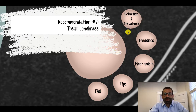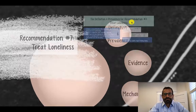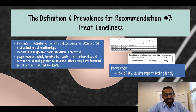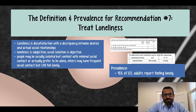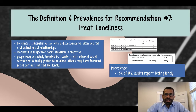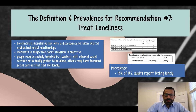Let's take a look at the definition and prevalence of loneliness. Loneliness is dissatisfaction with a discrepancy that one sees between their desired and actual social relationships. In other words, they want to have an intimate partner but don't, or they want to have friends — more friends or different friends — but don't. Between what they have and what they desire, there's a discrepancy, and it causes dissatisfaction.